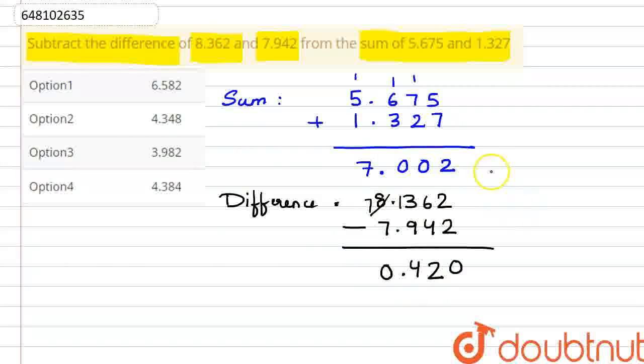Now we have to find the values. Here we have our sum, and second is our difference. We have to subtract these two. So we will do 7.002 minus 0.420.